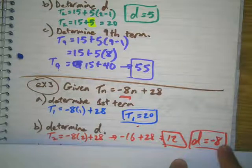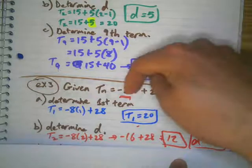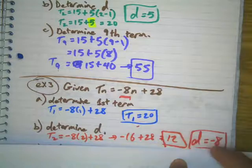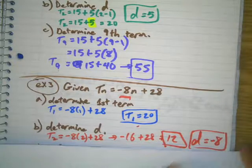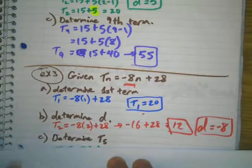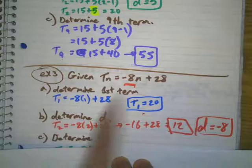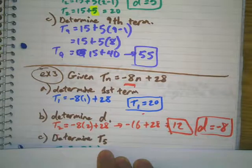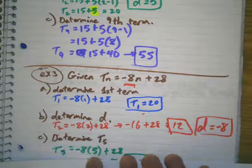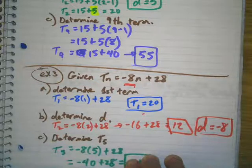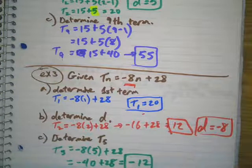You probably could have figured out that the slope here is negative 8, so d is going to be the same as the slope. Now find the fifth term — just plug in 5 for n. So negative 8 times 5 plus 28 gives us negative 40 plus 28, which is negative 12. Negative 12 is the fifth term.